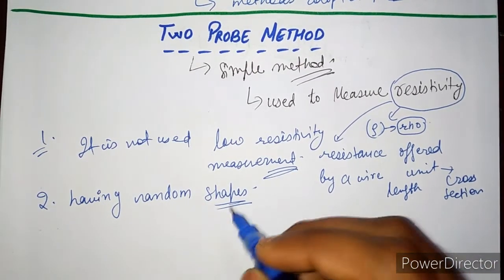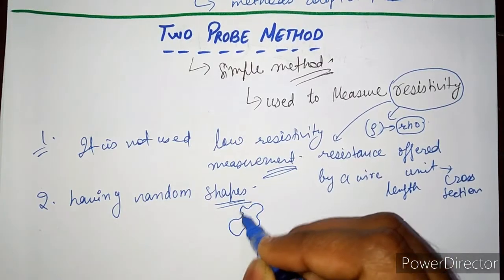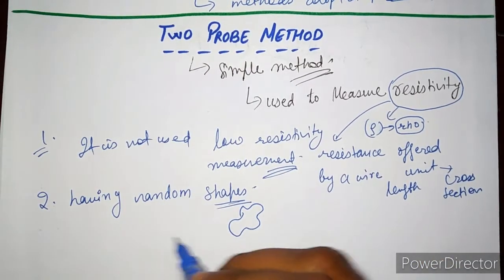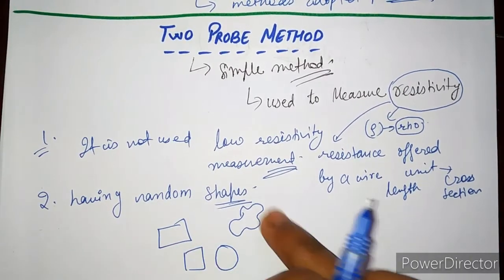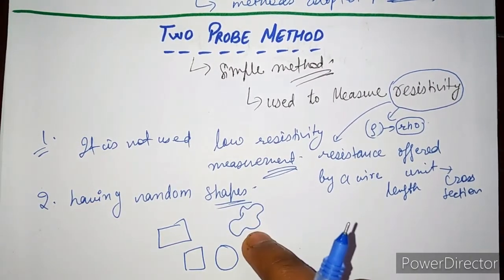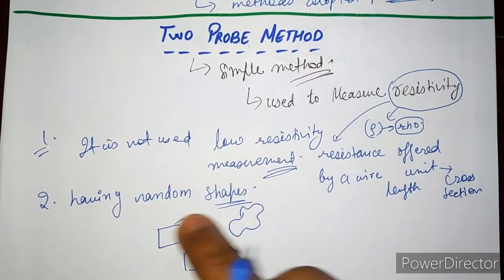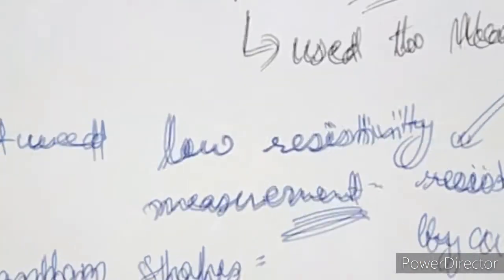And also this method is not used for material which has random shapes. Random shapes means they have any arbitrary structure, not a fixed shape like rectangle or square or circle. These are fixed shapes but this is a random shape. So this method is not applicable on material which has random shapes.